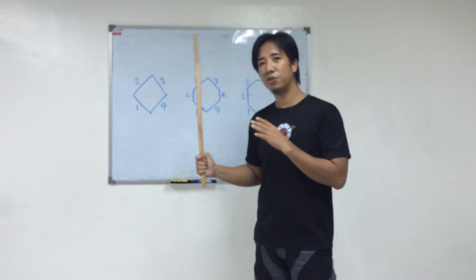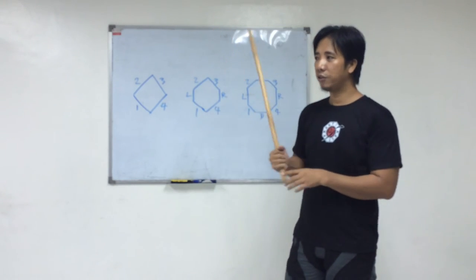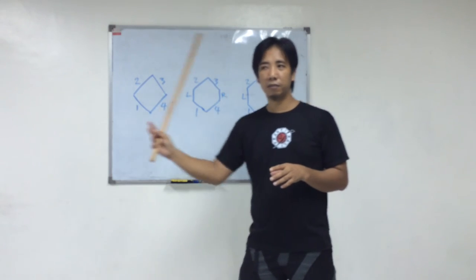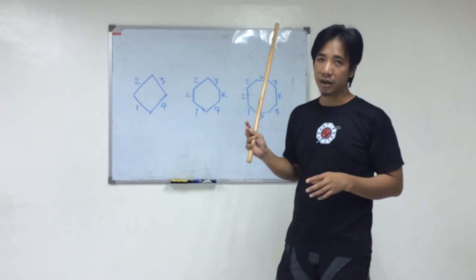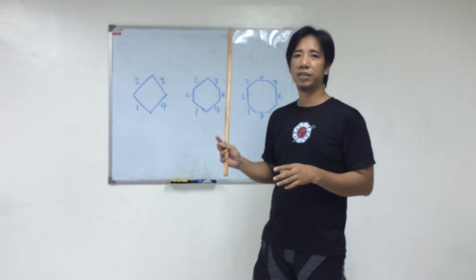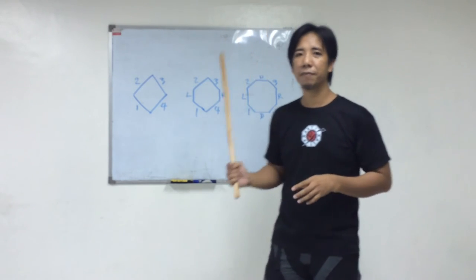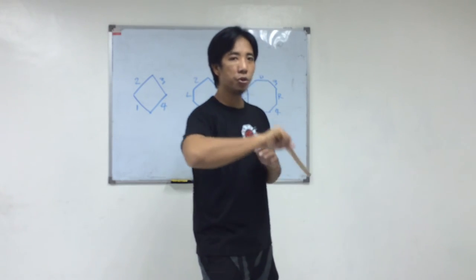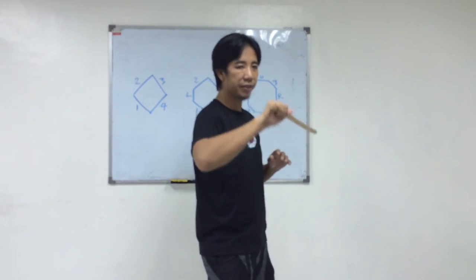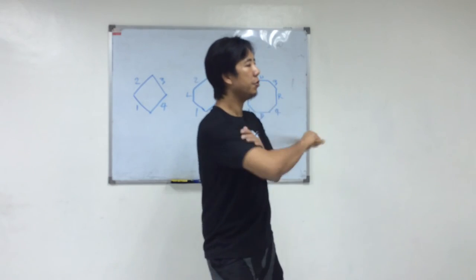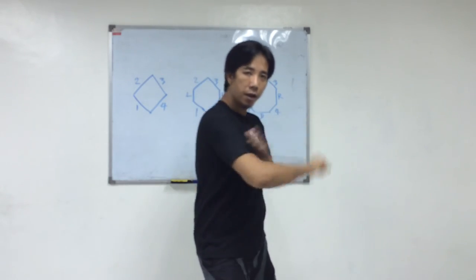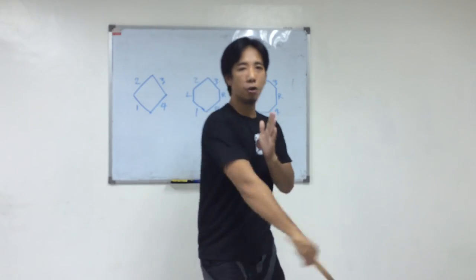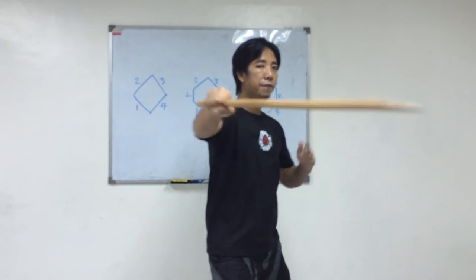Because if you get used to it and during a fight you open your hand while doing your strike, there's a chance that you might get disarmed easily. Let me show you this twirling motion when I do some strikes. You can see I'm not opening my hand. It's always in full grip.